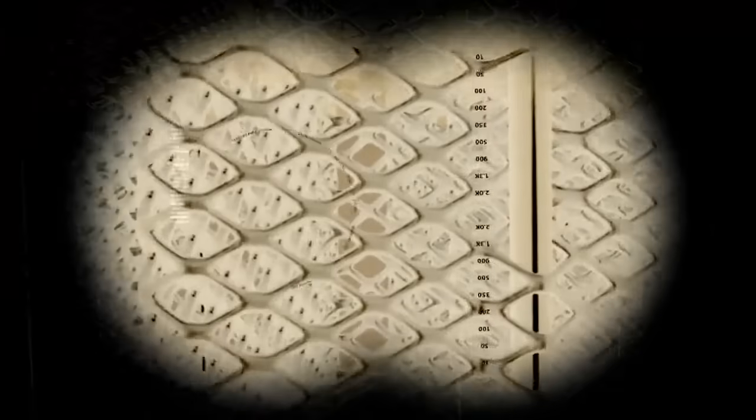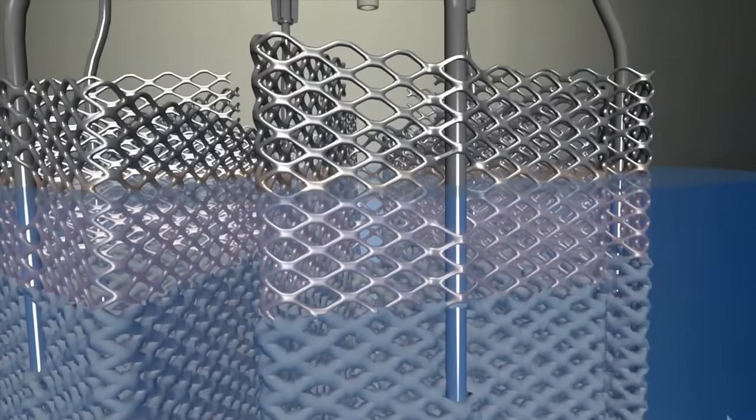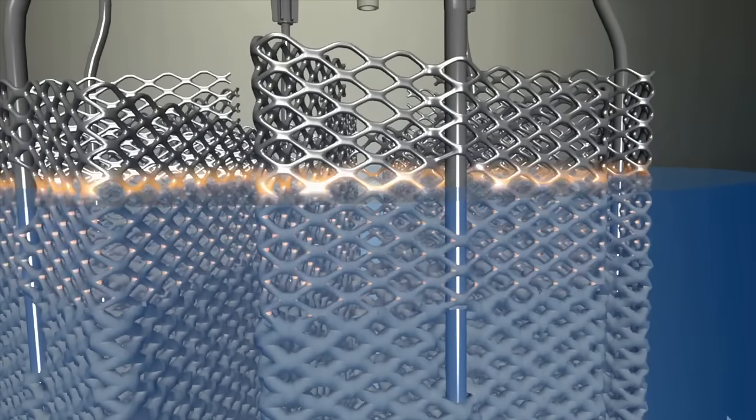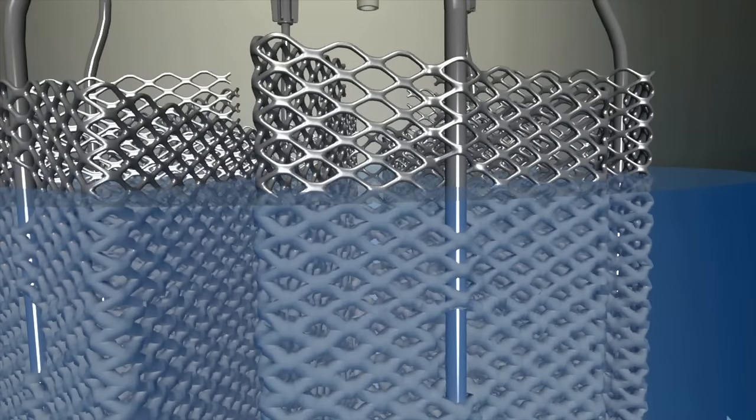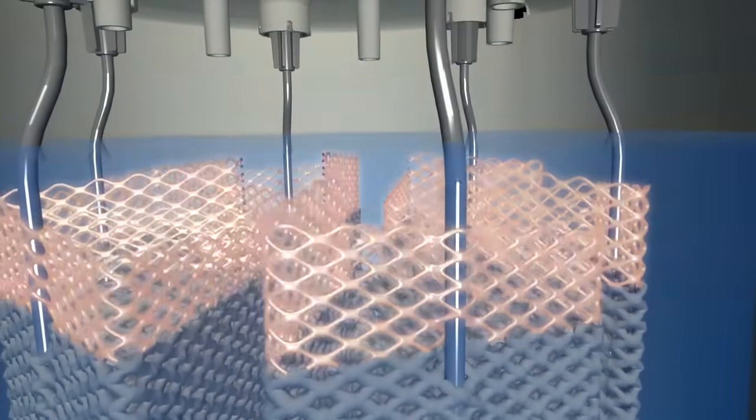Continuous operation results in mineral deposits building up on the electrodes as well. The control system detects this and automatically raises the water level. Clean electrode surfaces are then submerged, maintaining optimal performance and accurate humidity control.